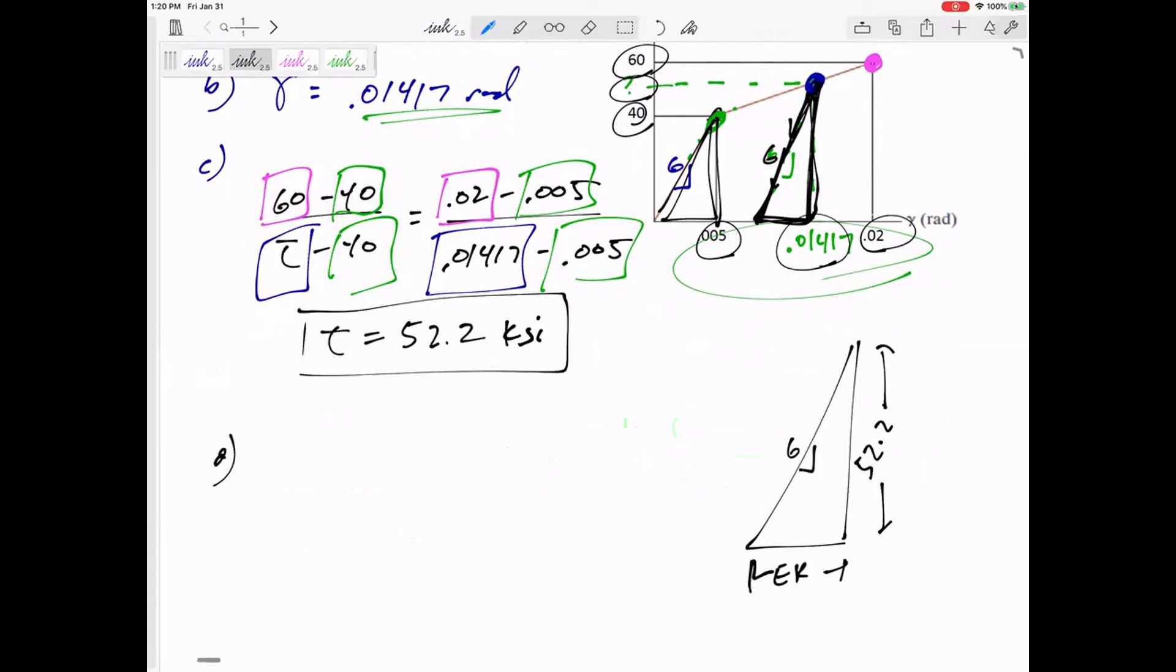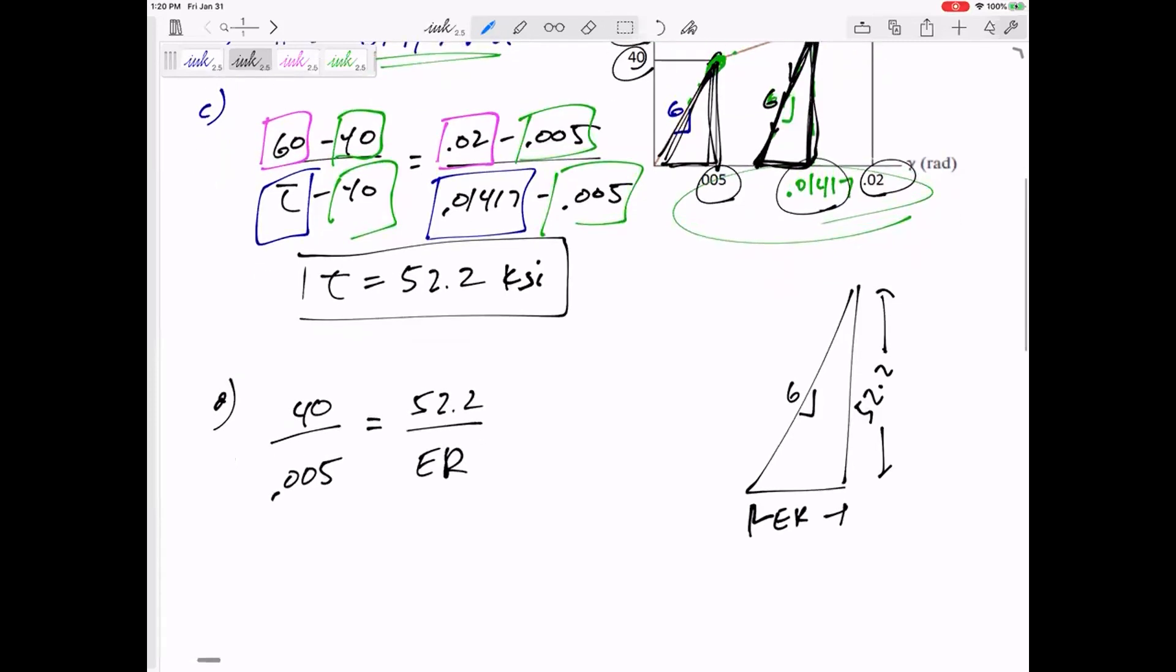So what is G anyway? Well, it is 40 over 0.005. So whatever value that is. And so that would equal 52.2 over the elastic recovery. So the elastic recovery is 0.0065 radians. And maybe that's my answer. If it asked, what is the elastic recovery in radians, that'd be my answer.